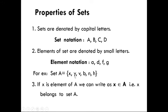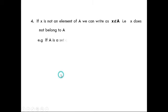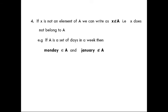So if these are some elements of set A, we can say x belongs to A. Property number four: if x is not an element of capital A, we write x does not belong to A. For example, if A is the set of days of the week, then Monday, Tuesday, Wednesday, Thursday, Friday, and Saturday are elements, so Monday belongs to A. However, January is not the name of a day, so January does not belong to A.